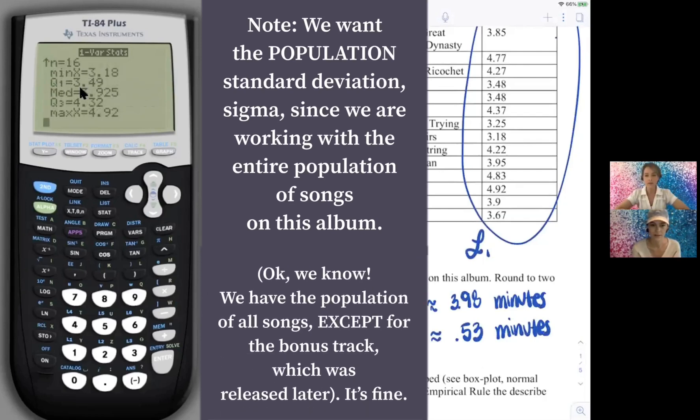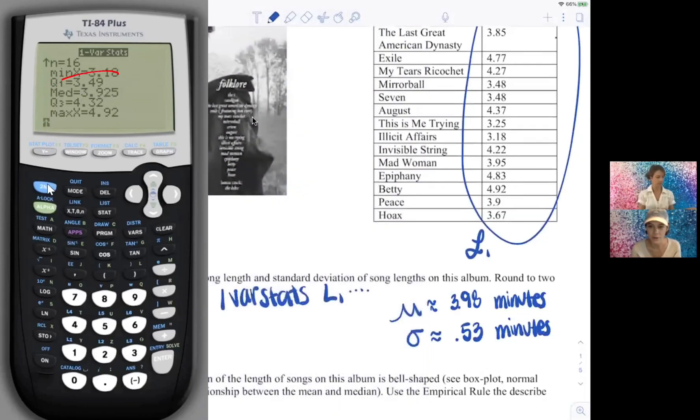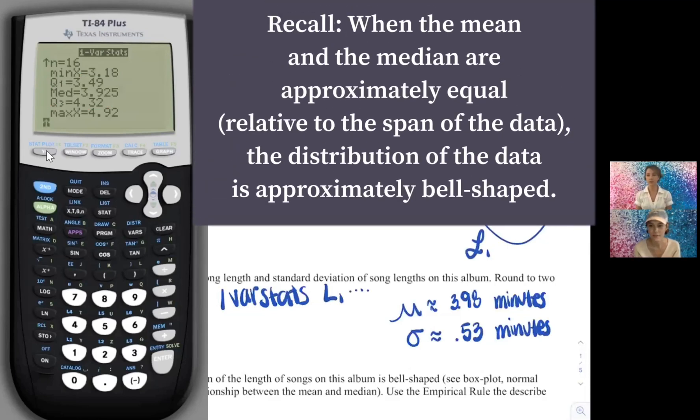What's the median? 3.93. Okay, so kind of close to 3.98. And I actually did a little background now looking at the histogram. It's not super bell-shaped, but I did a little analysis that we are going to study more in later chapters.